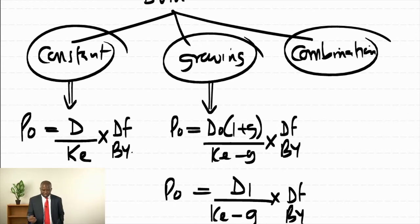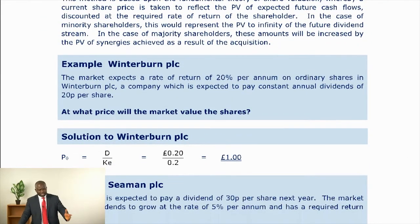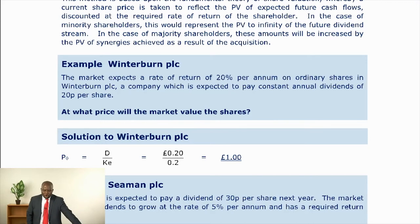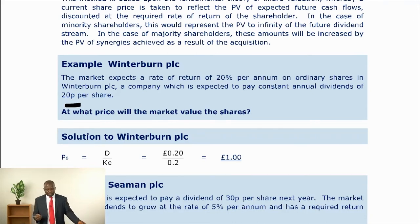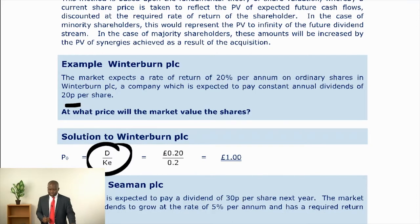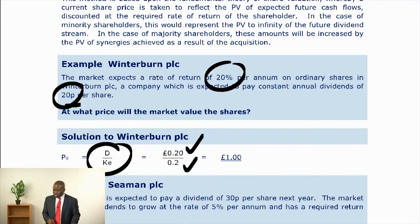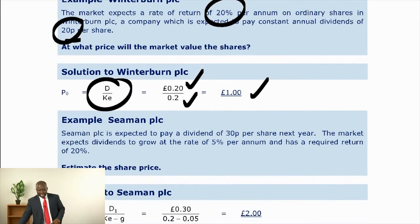The combination can take any form. Let's take the Winterman PLC example — this is just basic. The market expects a rate of return of 20% per annum on ordinary shares in Winterman PLC, a company expected to pay a constant annual dividend of 20p per share. At what price will the market value the shares? Because the constant dividend is 20p, the market price using the dividend valuation model is D / Ke = 20p / 20% = £1. As I said, don't overthink this.